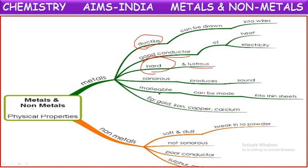Metals are malleable - they can be beaten into thin sheets. Examples of metals: iron, gold, copper, silver, calcium, potassium, magnesium. There are so many metals like these.